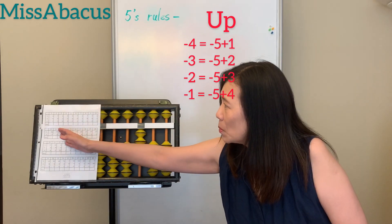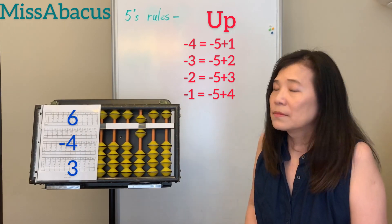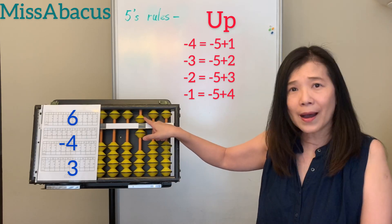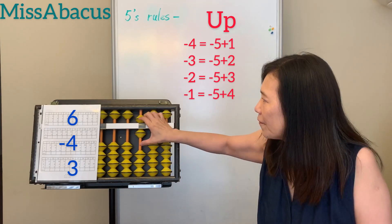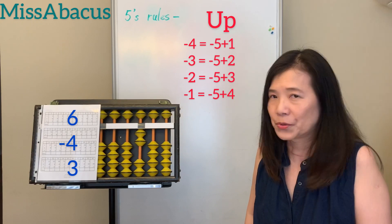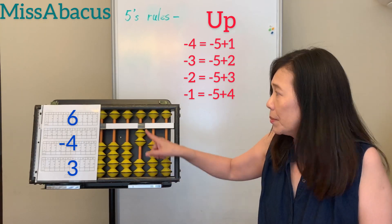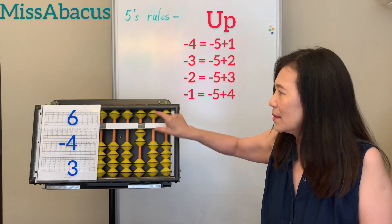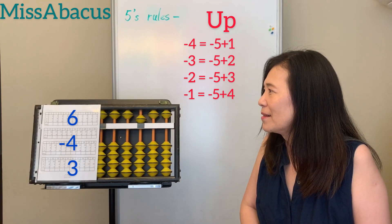Let's do problem one: 6 minus 4. You only have one, not enough — but you have 5, so minus 4 is up 5, up 1. Next number plus 3: you only have two left, but you have 5 available. Plus 3 — down 5, up 2. Remember the answer: 5.